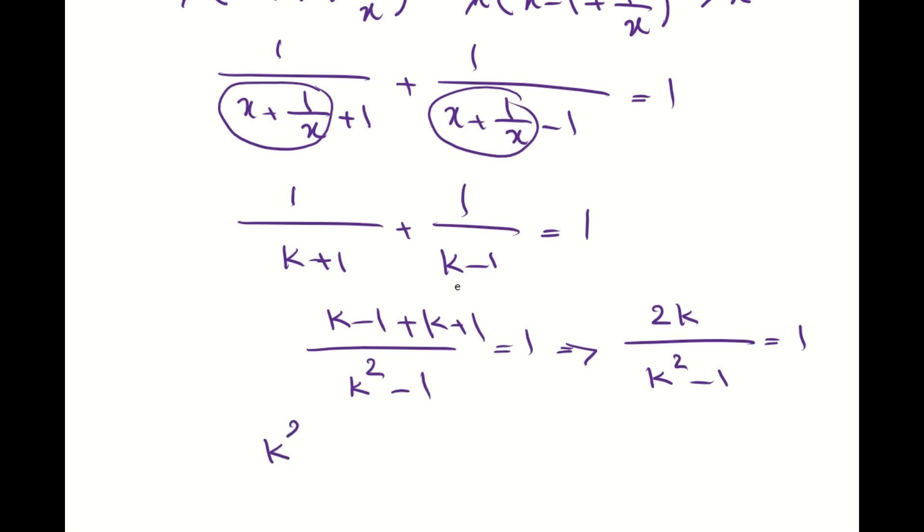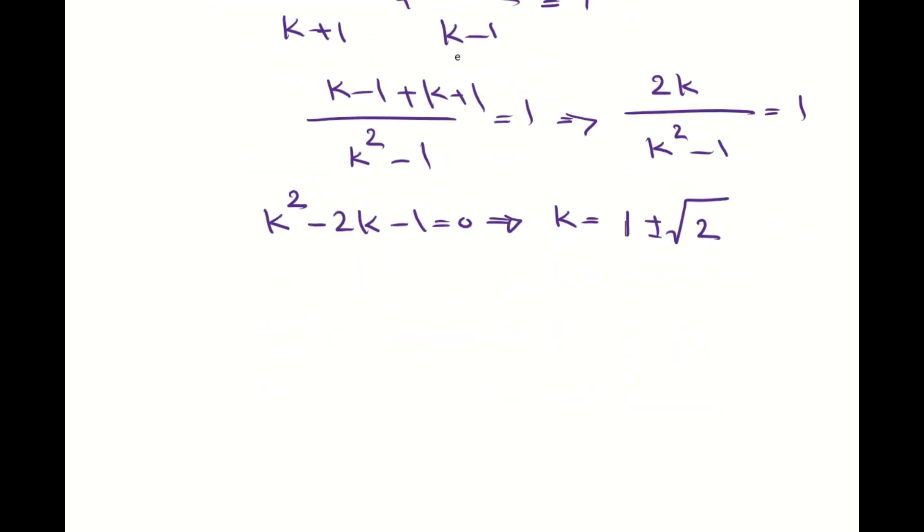And this means that k squared minus 2k minus 1 is 0, which basically means that k is going to be 1 plus minus radical 2. Now, what does it mean? It means that x plus 1 over x is 1 plus minus radical 2.